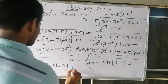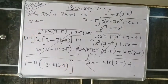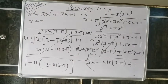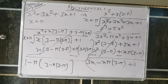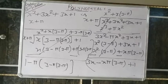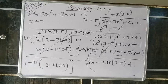So we are checking the answer of Exercise 2.3. The remainder is −π³. Wait — remainder is −π cube. Let me verify: the remainder is −π³. Minus π cube. So we will open it.